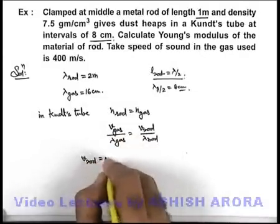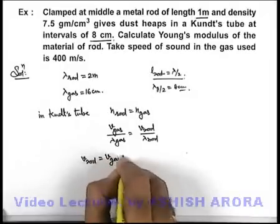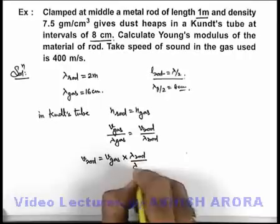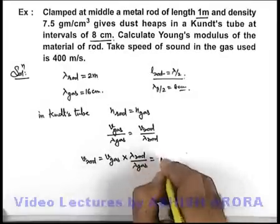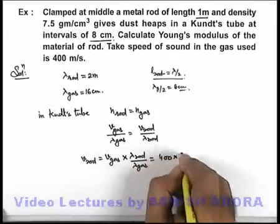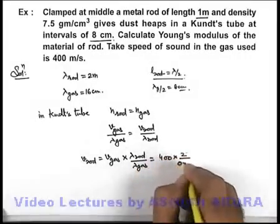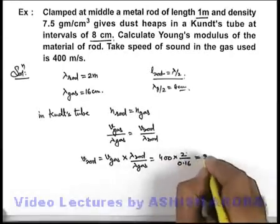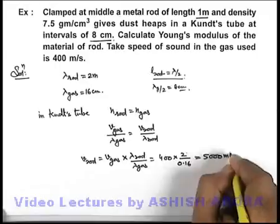Velocity of sound in rod to be equal to v_gas multiplied by lambda_rod by lambda_gas. If we substitute the values, this is 400 multiplied by 2 divided by 0.16. On simplifying, we'll get this speed to be 5000 meters per second.